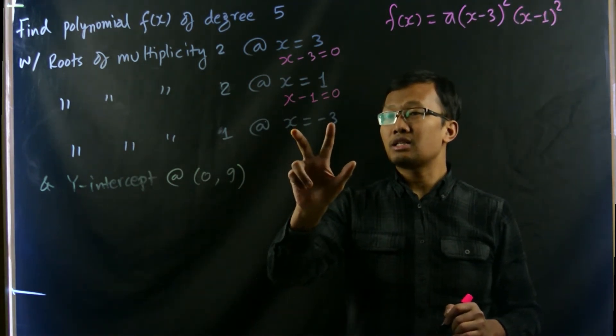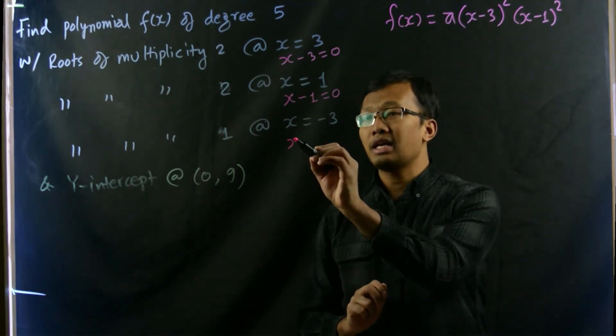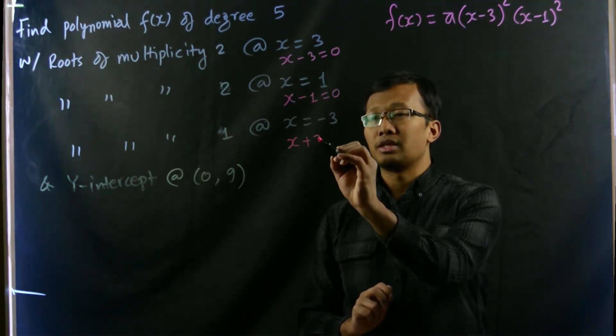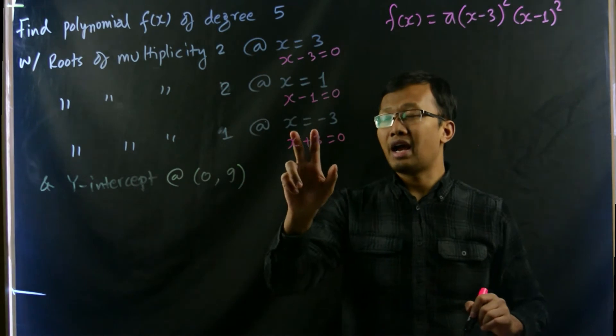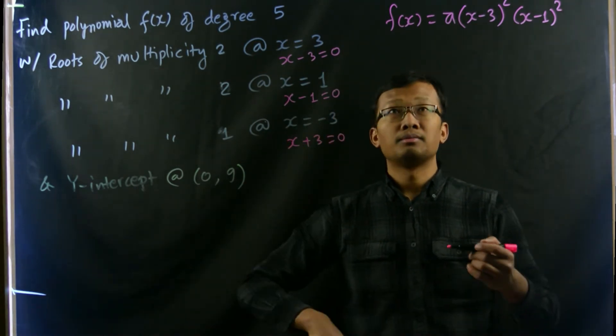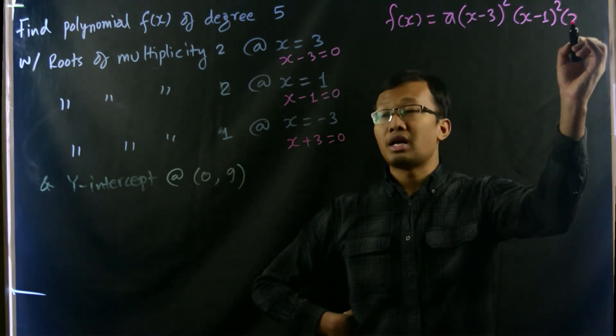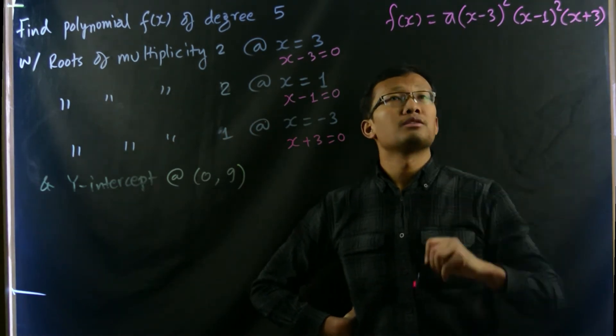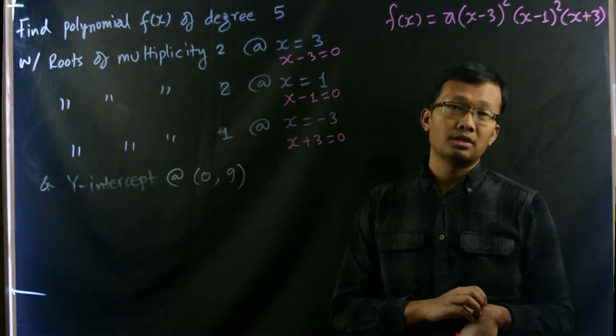And finally x equals negative 3 means x plus 3. Whenever you add plus 3 to both sides then the right hand side would be 0. So that would be x plus 3. So this is our polynomial function.